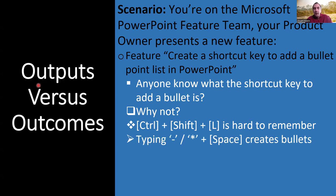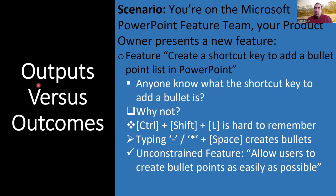There is another way to add bullet points that we all do intuitively without even thinking: type an asterisk or a hyphen followed by a space or tab, and it will create bullet point lists for you in PowerPoint, Word, and other Office products. Much easier, does exactly the same thing, but far more logical and intuitive — you don't need to remember Ctrl+Shift+L.